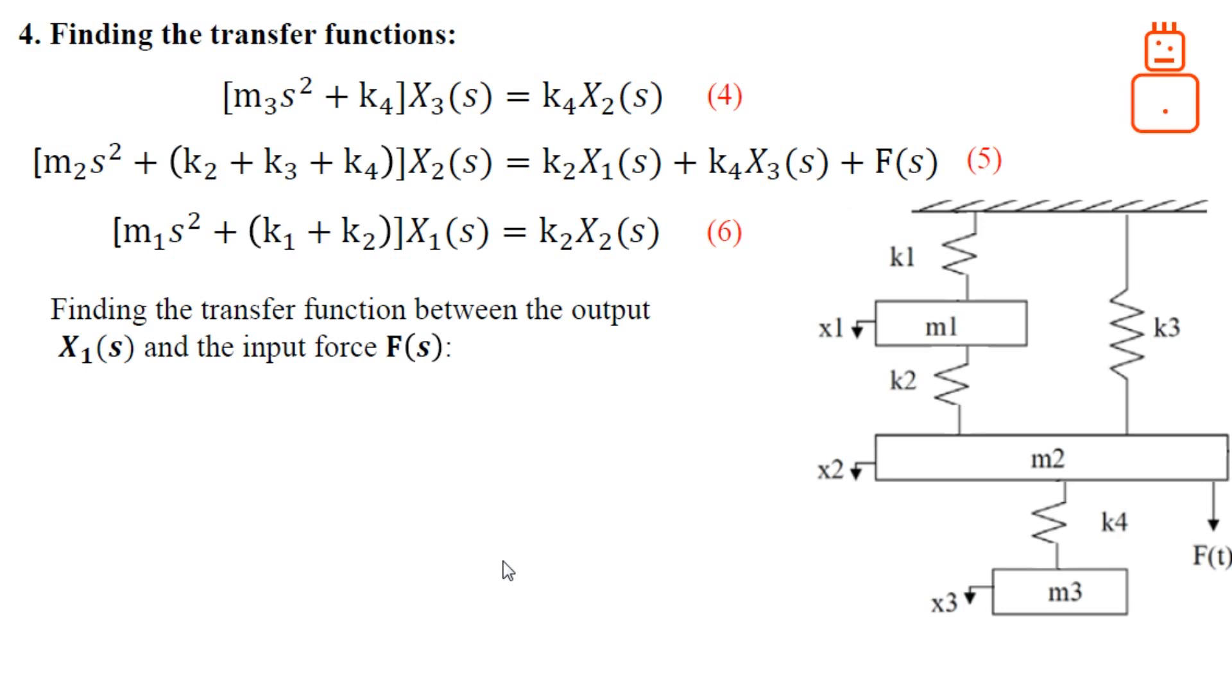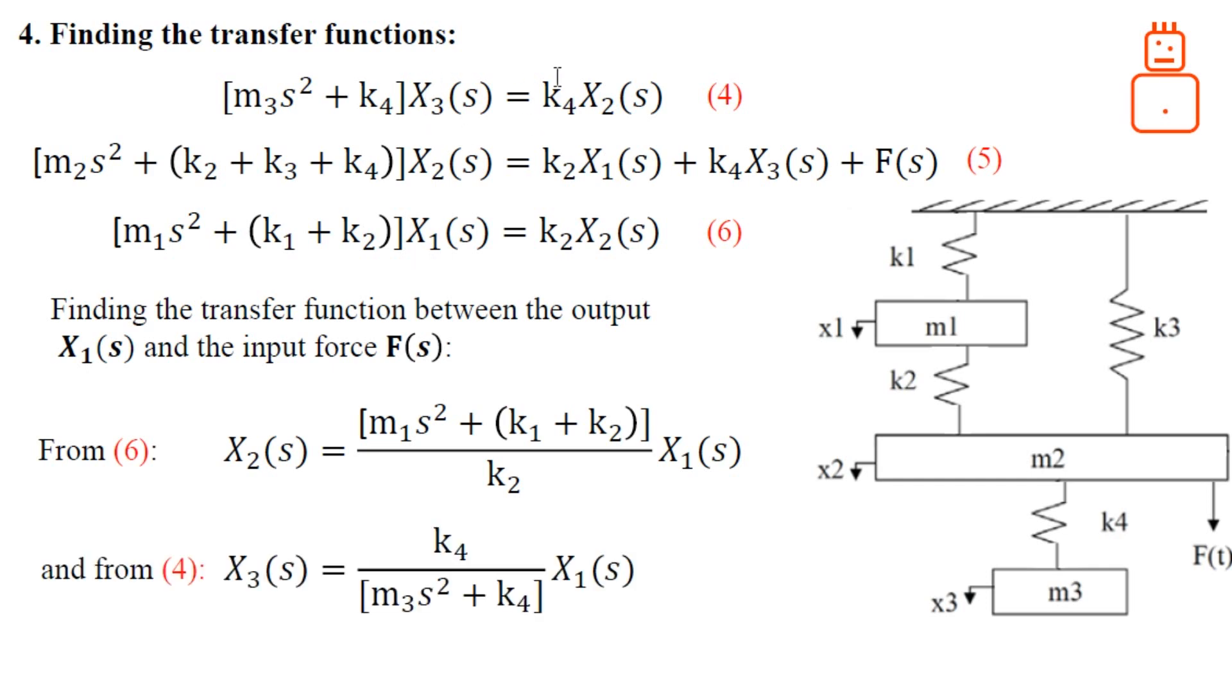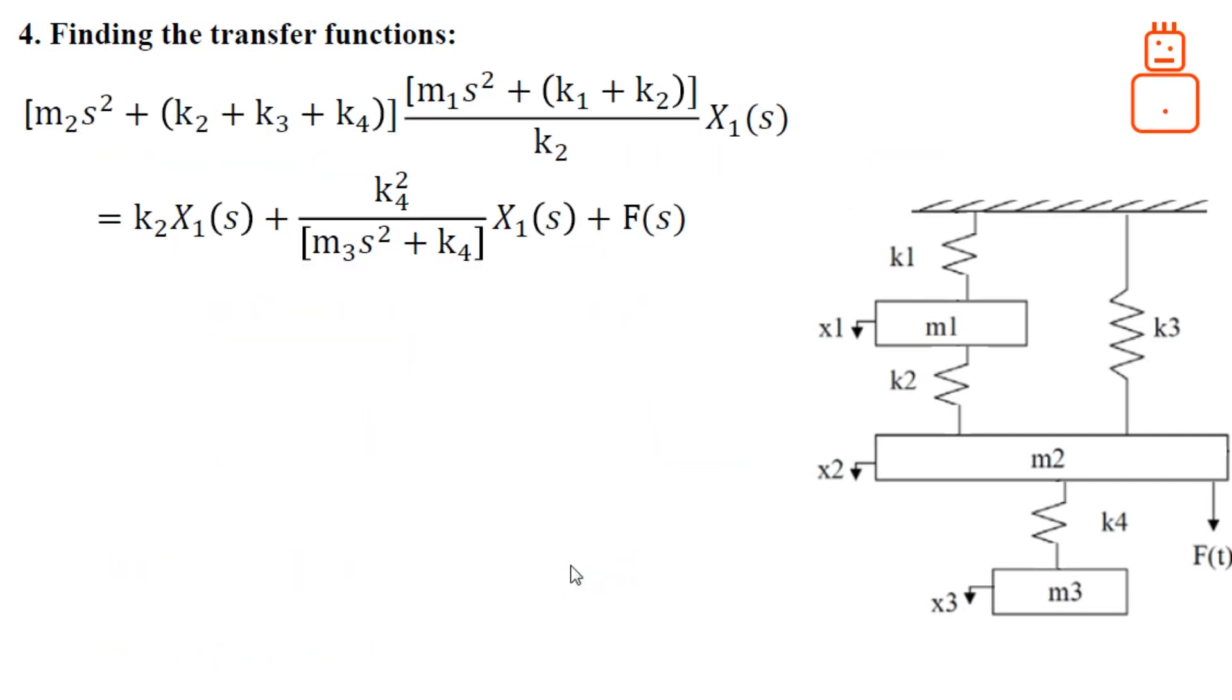If we want to find the transfer function between the output x1 and the input F(s), we can perform the following steps. From equation 6 we can write x2 in terms of x1. From equation 4 we can write x3 in terms of x1. So we have x2 and x3 all in terms of x1. You can introduce these two relationships in this equation. Instead of x2 you have a relationship in terms of x1. For x3 also you have another relationship that is in terms of x1.